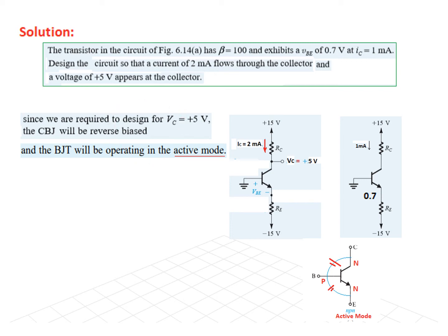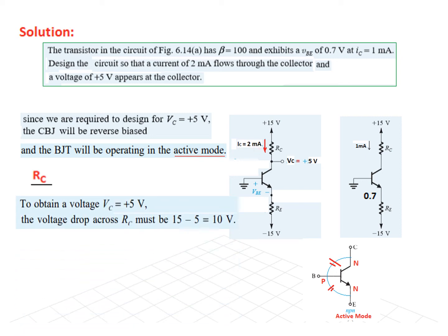To find RC: the voltage drop across RC is VCC minus VC = 15 minus 5 = 10 volts. The current is 2 milliampere. Therefore RC equals voltage divided by current = 10V / 2mA = 5 kilohms.